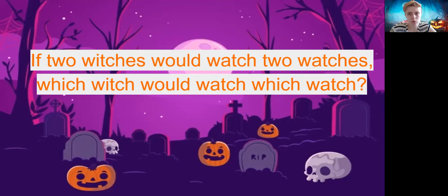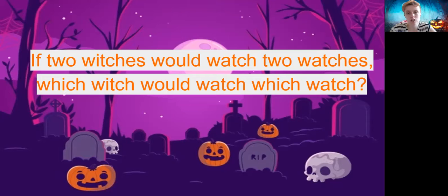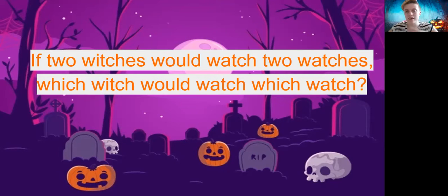If two witches would watch two watches, which witch would watch which watch? You'll notice how much easier it is when you make sure to properly enunciate all the sounds. That 'd' on 'would' becomes very important — even though in normal speech we'd often just say 'would' without pronouncing that 'd.' 'If two witches would watch two watches, which witch would watch which watch?' Play with tongue twisters. See how fast you can say them. Find other tongue twisters too. The more you work with them, the more you can work on your enunciation and the more easily you'll be able to do faster paced things as you try to play with pacing in your acting or storytelling.